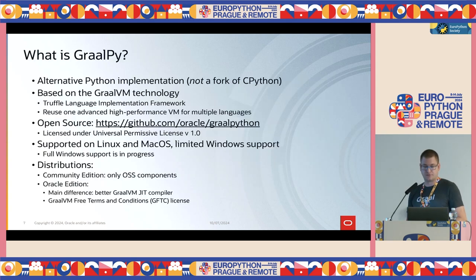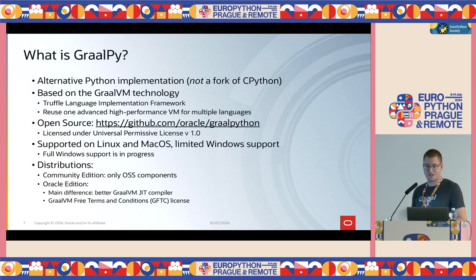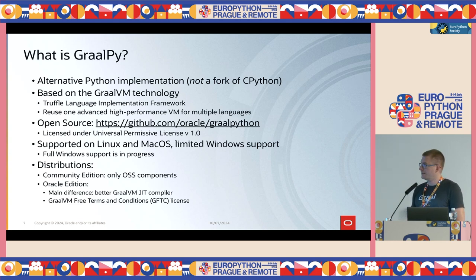GraalPy is not a fork of CPython — it's a different implementation, based on the GraalVM technology, more specifically on something called the Truffle Language Implementation Framework. The idea is that you use one high performance virtual machine to implement and run multiple programming languages. GraalPy is open source, licensed under a permissive license, and supported on Linux and macOS on both AMD64 and ARM64 architectures, including Mac M1 and M2. It has limited support for Windows, which is a work in progress, and we would like to eventually reach full support for Windows as well.